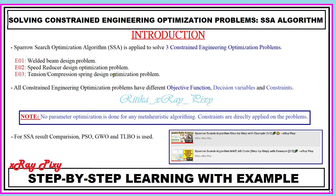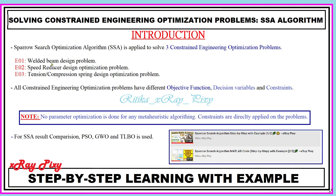The first algorithm is the Sparrow Search Optimization Algorithm (SSA), and we apply this algorithm on three different problems. The first problem is the welded beam design problem, the second is the speed reducer design optimization problem, and the last one is the spring design optimization problem.